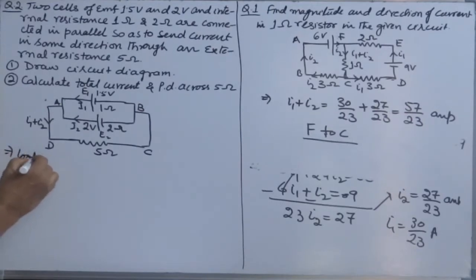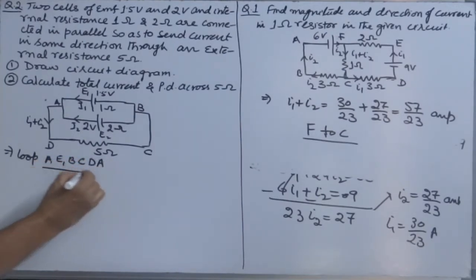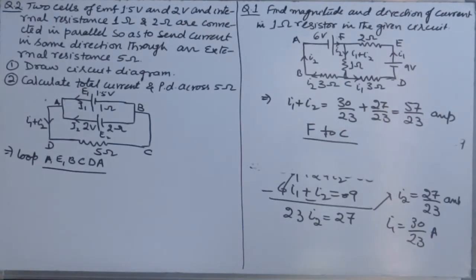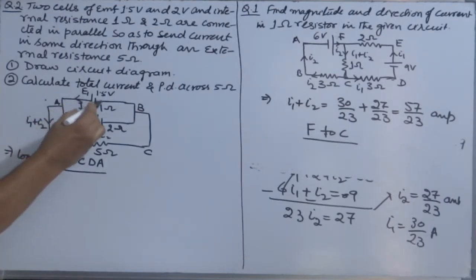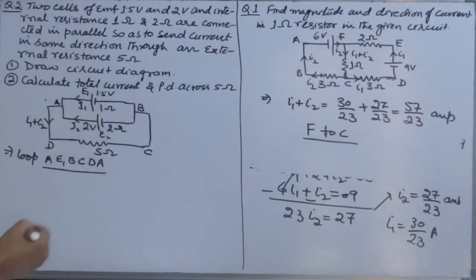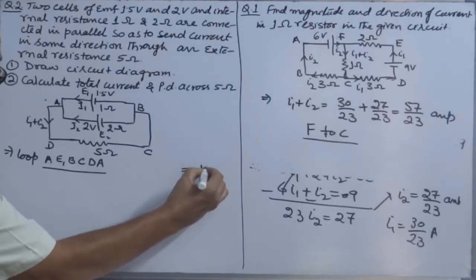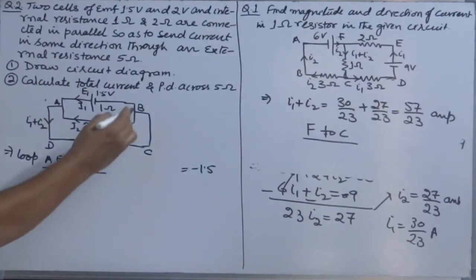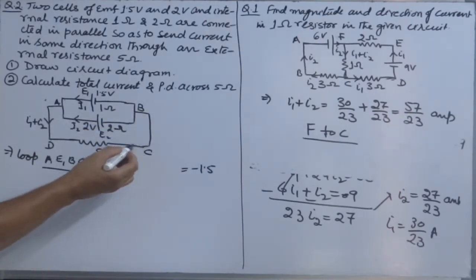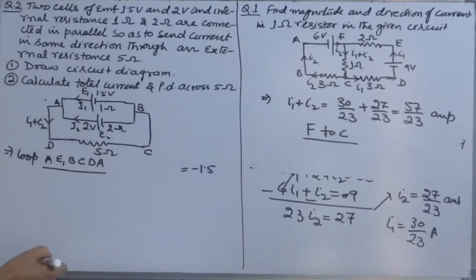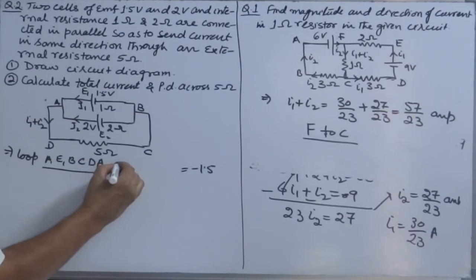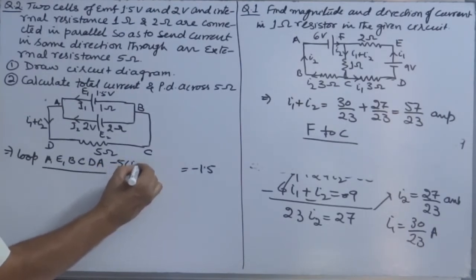In loop AE1BCDA: moving from A to E1, we approach the positive terminal first, so this is minus 1.5. Moving from B to C there is no resistance. From C to D, the 5 ohm resistance has current in the opposite direction, so we write minus 5(I1 + I2). From A to E1, the 1 ohm internal resistance with current in same direction gives minus I1.